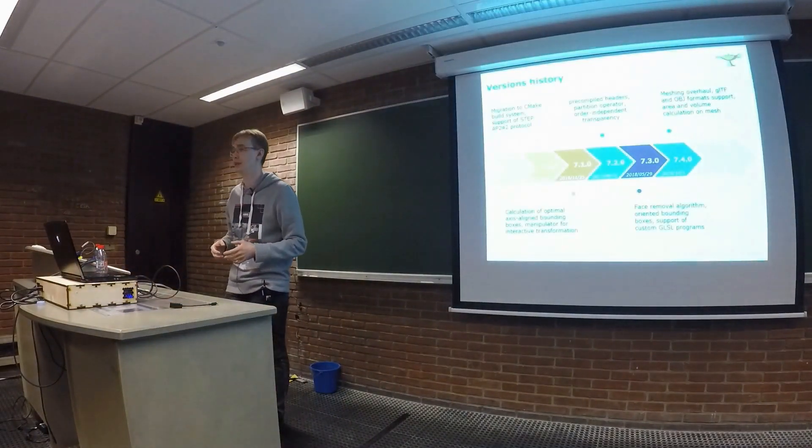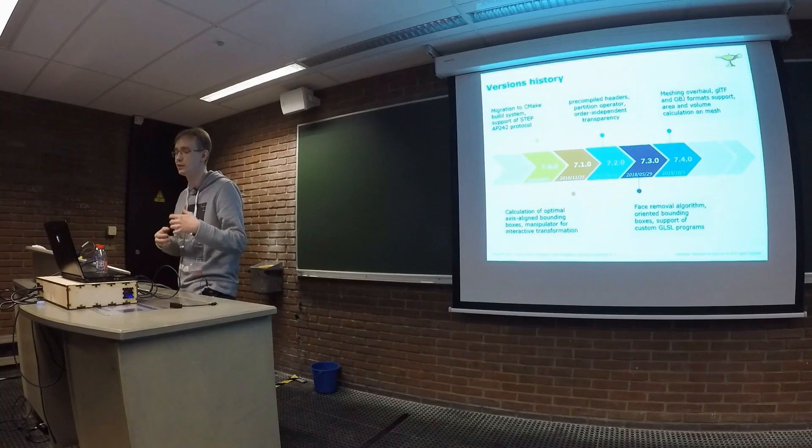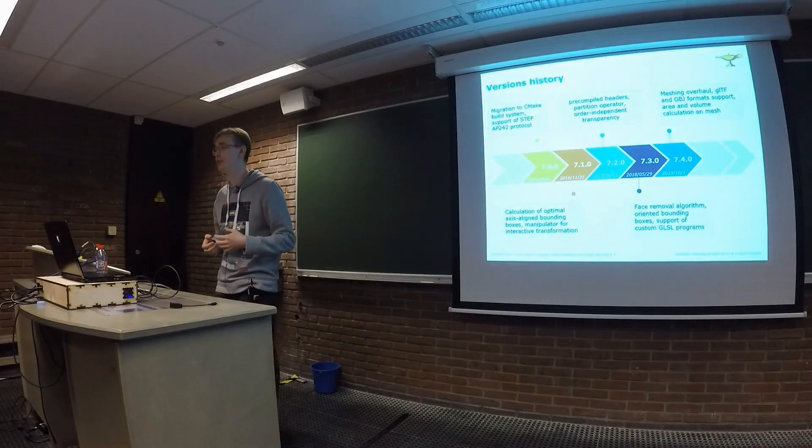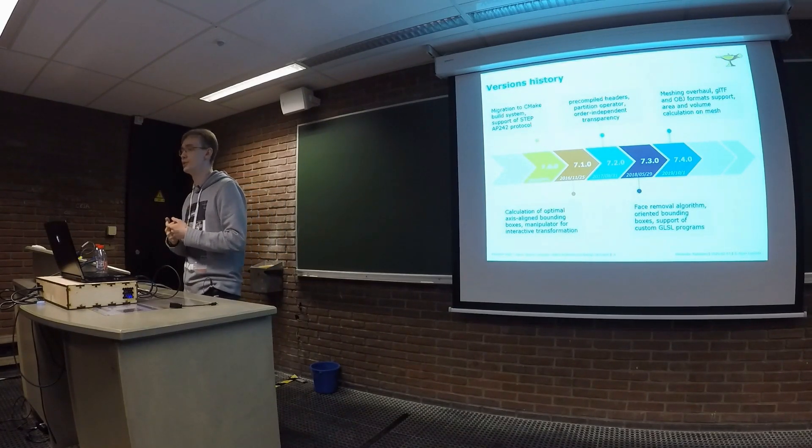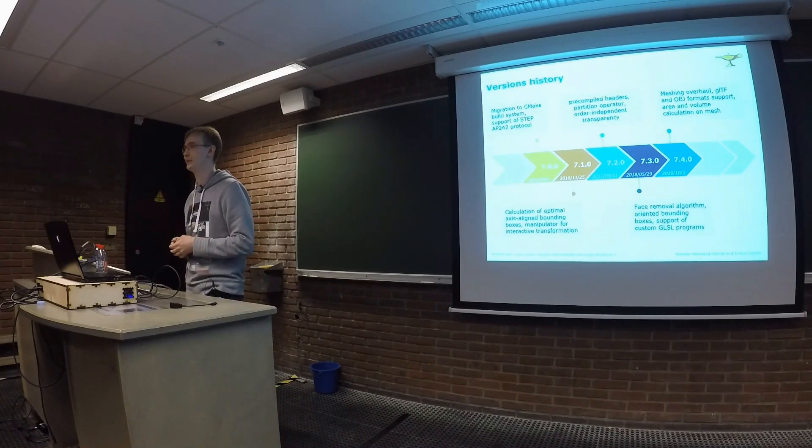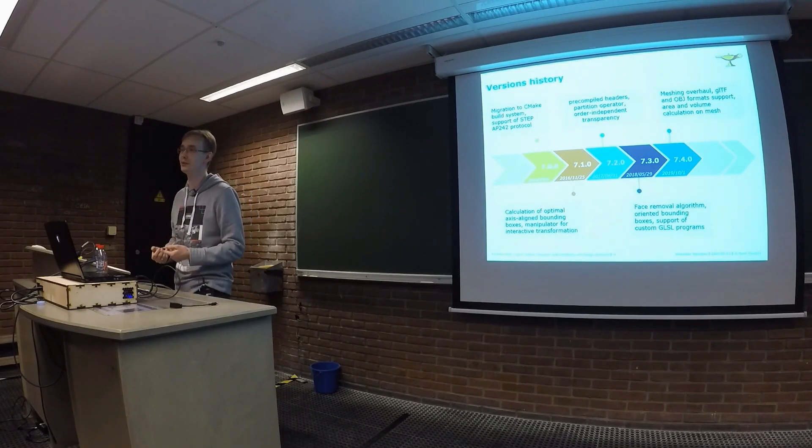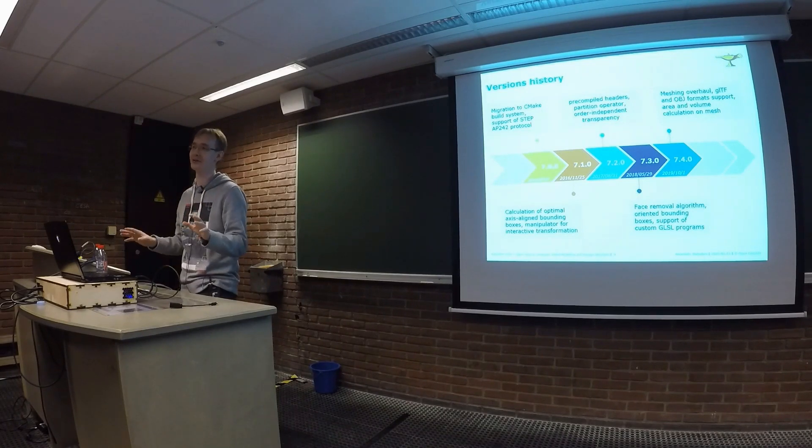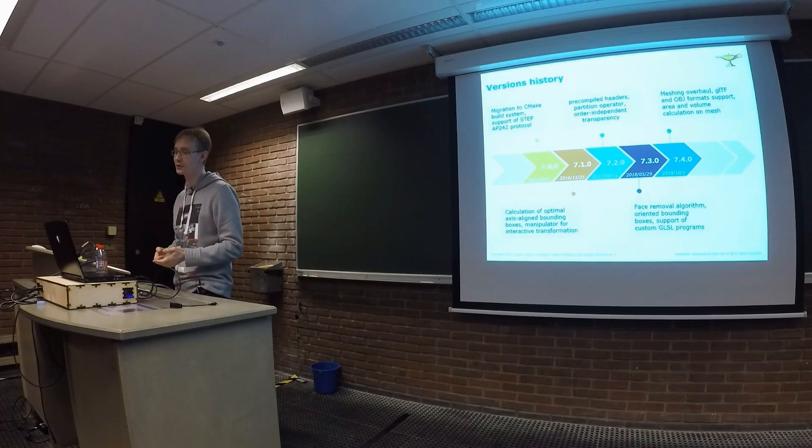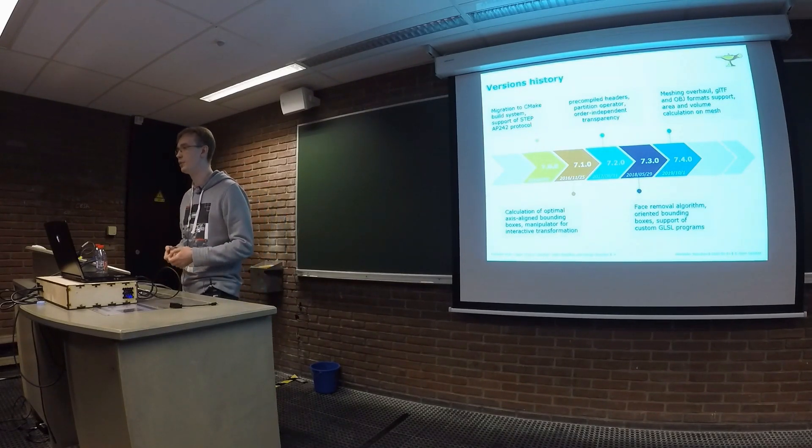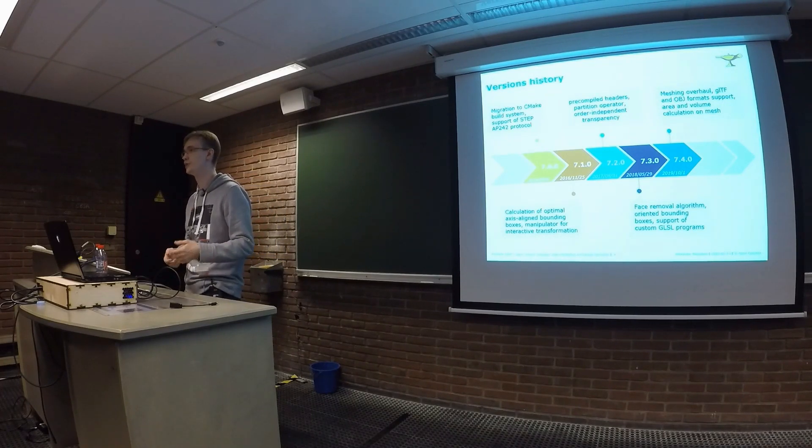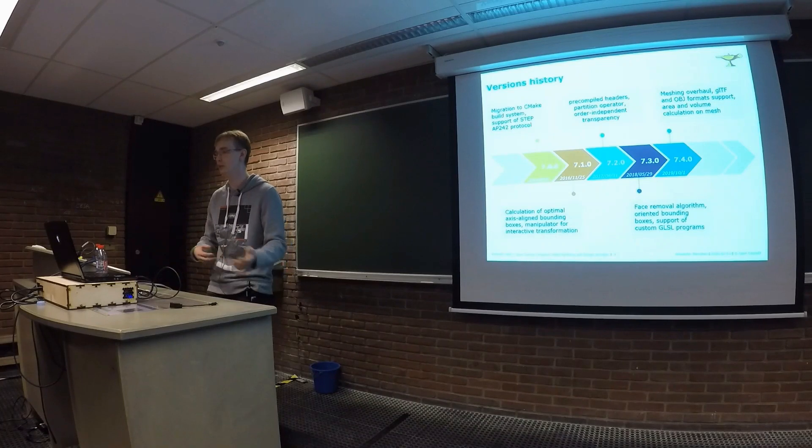There are some nice features which have been added in the latest releases and I would like to attract your attention to them. 7.0. We migrated from our own build system to the well-known CMake build system. I have to be polite here, but when I entered to the company several years ago and I faced with our build system, I can say it was unfriendly to newcomers. I have to be polite. But CMake offers the unified pipeline which is fruitful for developers and the community. Our STEP translator was extended by application protocol 242, which deals with the product and manufacturing information. So you can write and read this kind of data.